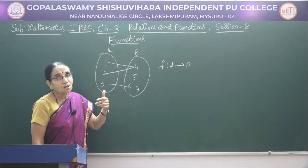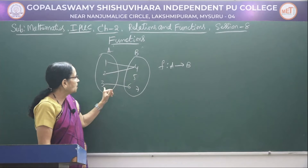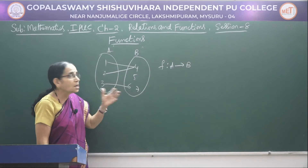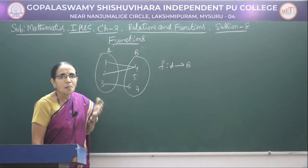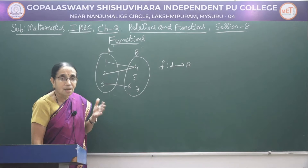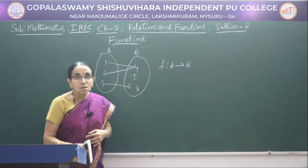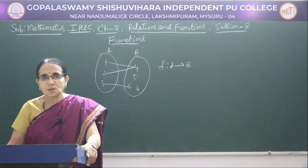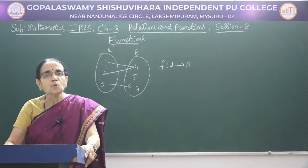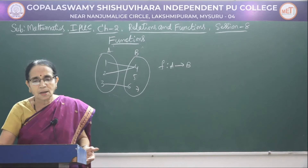Suppose I had taken the relation 'less than': 3 is less than 6, 3 is less than 5, 3 is less than 4, 3 is less than 7 — so 3 will have 4 associations. It cannot be taken as a function; it can be a relation but not a function. So understand the difference between a relation and a function, because both terms will be used. Here afterwards we will be considering function only.